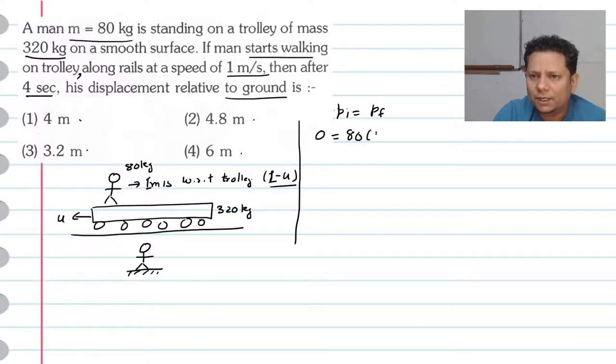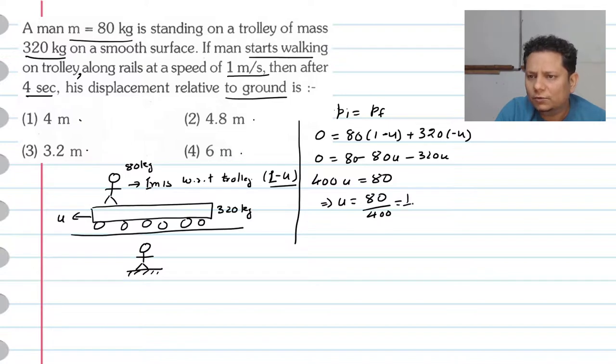First write the man's momentum: 80 multiplied by 1 minus u, plus the trolley's momentum: 320 multiplied by minus u. This equals zero. Expanding: 80 minus 80u minus 320u equals zero. So 400u equals 80, which implies u equals 80 divided by 400, which equals 1 by 5.